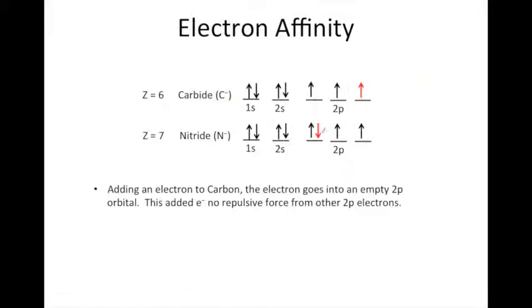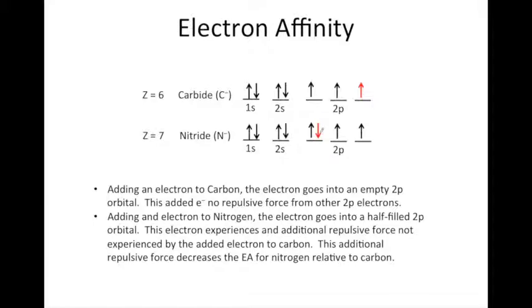Why is that? Adding the electron to carbon, it goes into an empty 2p orbital, so it's further away from the other electrons and experiences no additional repulsive force. When we add the electron to nitrogen, it goes into an already occupied 2p orbital, so these two electrons will repel each other. There's an additional repulsive force not experienced by the electron added to carbon. Therefore, this electron added to nitrogen is not held as tightly, and it's less likely to add to nitrogen than to carbon because of this electron-electron repulsion. Be sure you understand the electron affinity trends, the exceptions, and can clearly explain why these exceptions occur.